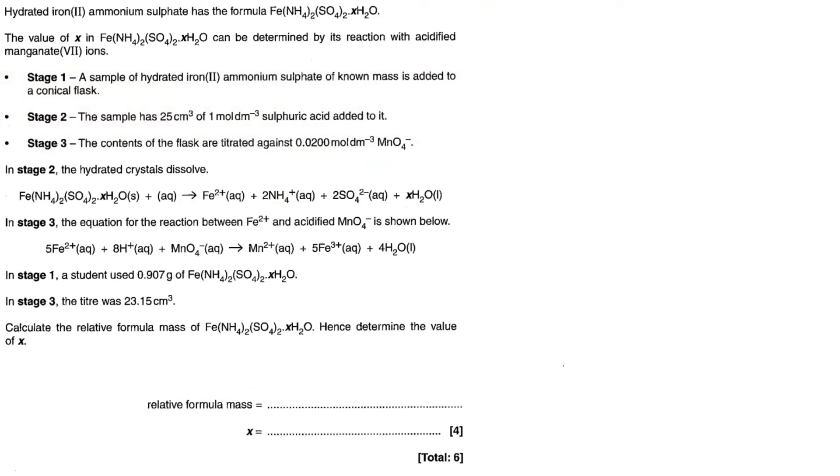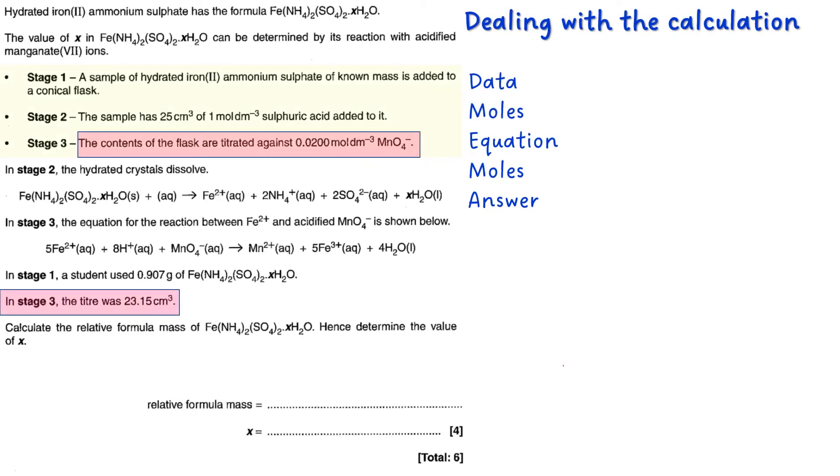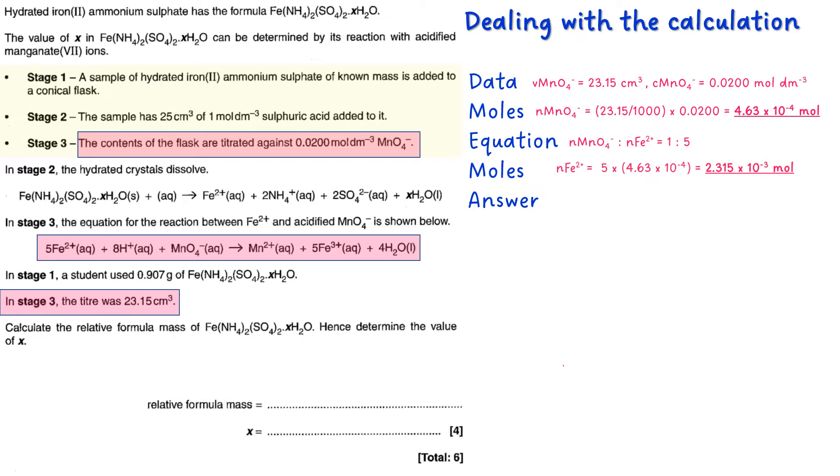The next thing to do is to do the calculation. So using Data, Moles, Equation, Moles, Answer, and using the information that gives you, you can pull those two things together to give you the number of moles of MnO4⁻, which is 4.63 times 10 to the minus 4. The equation clearly shows you it's a 1 to 5 mole ratio. So multiplying that up by 5 gives you 2.315 times 10 to the minus 3.